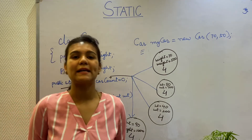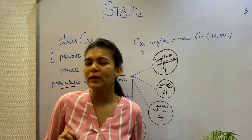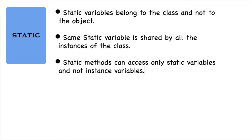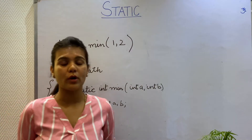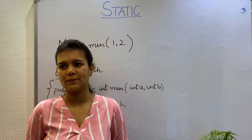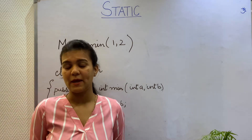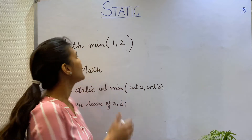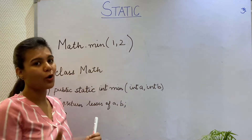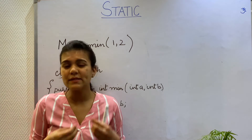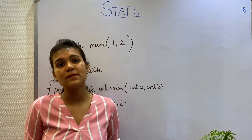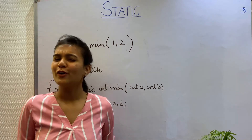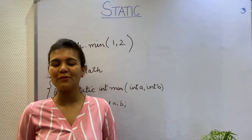When methods are declared as static, there are a few key points that we need to note. Static methods can access only static variables of a class and not the instance variables. The static methods are called using the class name and not the instance, because when the static method is called, the instance of a class might not even be present. So if the instance of the class is not present, the instance variables of the class will also not be present.